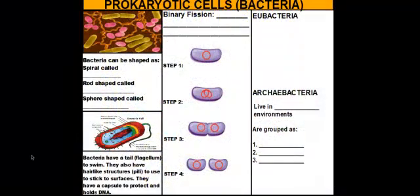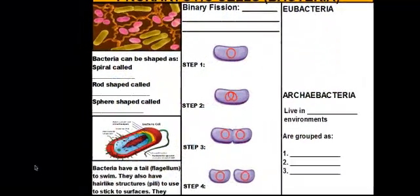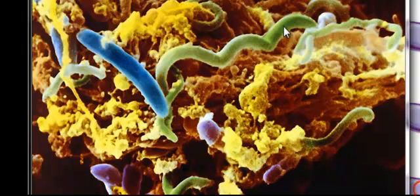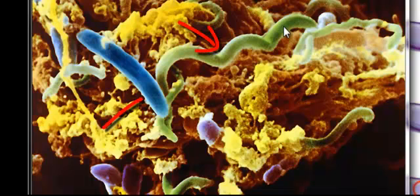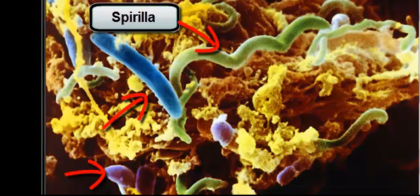Let's take a look at the three different shapes that a prokaryotic cell can be. If you take a look at this picture here, the prokaryotes, or the bacterial cells, are in the colors green, blue, and a pinkish-purple color. If you take a look at the green bacteria, you'll notice that they have a spiral shape to them. That's one of the shapes that a bacterial cell can be, and this is called spirilla.